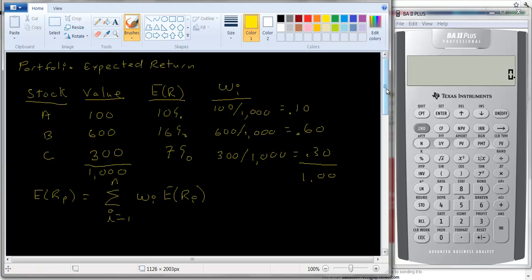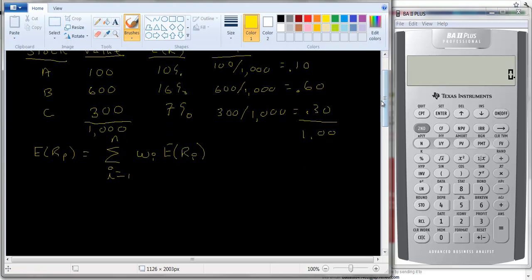So let's just calculate this. It's very easy to do. So the first stock is 10% and the expected return is 10%. So .10 times 10% plus 60% times the expected return of the second stock which is 16% plus .30 times the expected return of the third stock.